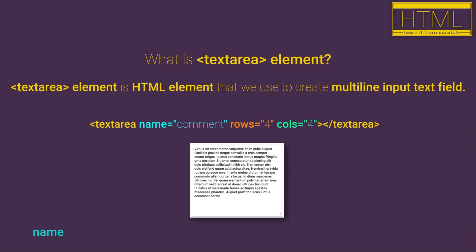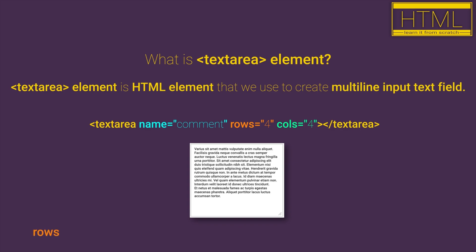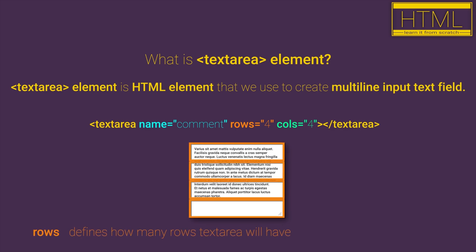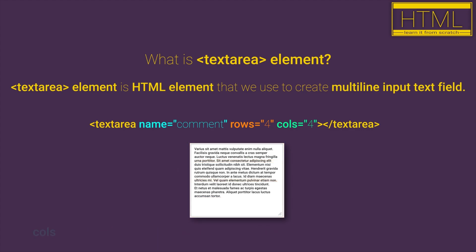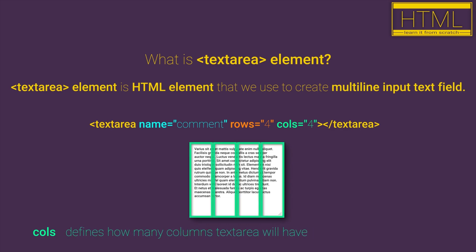Important attributes that we have for textarea are: name, which represents a unique name for our HTML element; rows, which defines how many rows the textarea will have — basically with rows we are defining the height of our textarea; and cols, which represents how many columns our textarea will have — basically with cols we are defining the width of our textarea.